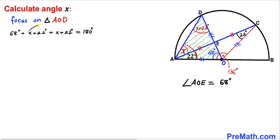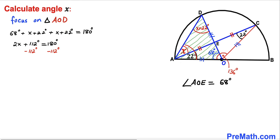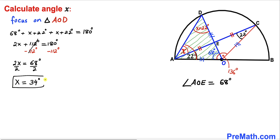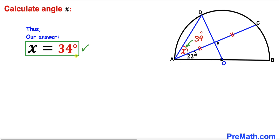Combining like terms: X + X gives 2X, and adding the constants gives 112 degrees, so 2X + 112 = 180. Subtracting 112 from both sides gives 2X = 68 degrees. Dividing both sides by 2, our angle X turns out to be 34 degrees.